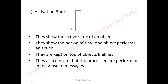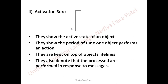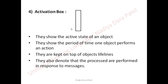The next symbol is the activation symbol. Activation boxes show the active state of an object — the period of time one object performs an action. They are kept on top of the object's lifeline. So the sequence is: object first, then the lifeline, then the activation boxes. They also denote that processes are performed in response to messages. These are the four major important notations of our sequence diagram. The basic focus of our sequence diagram should be on capturing the interaction and giving us the sequence of messages. Do not forget to draw and write messages in the right sequence.